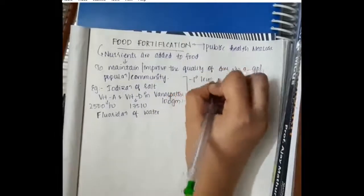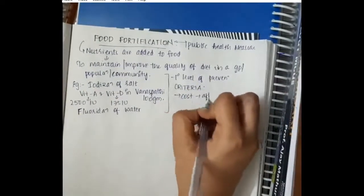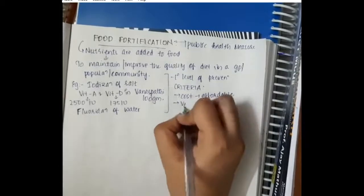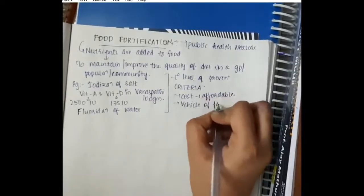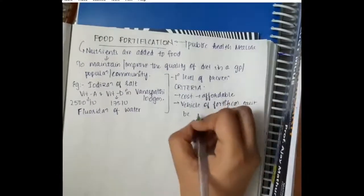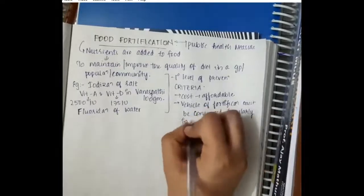All these come under primary level of prevention. Criteria of fortification include: the cost of fortification should be affordable, and the vehicle of fortification must be consumed regularly in the diet, for example salt.